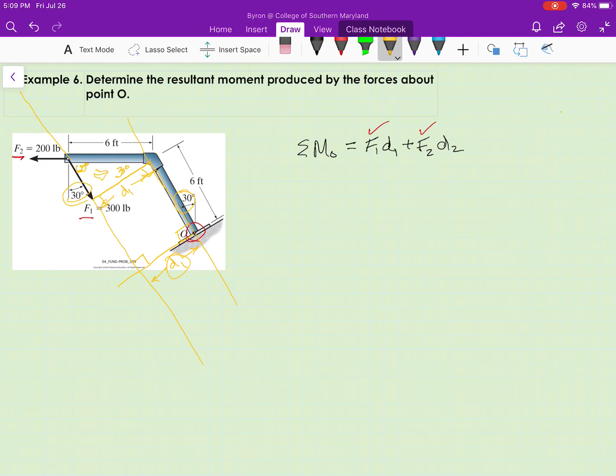Now I can get D1 because I know the hypotenuse of that triangle. So the sum of the moments, I'm going to assume counterclockwise moments are positive,